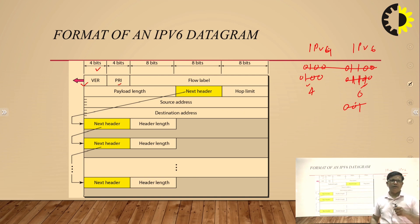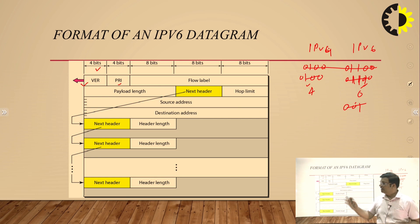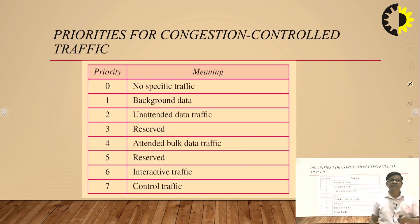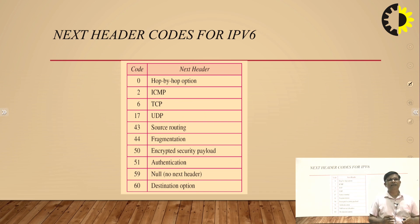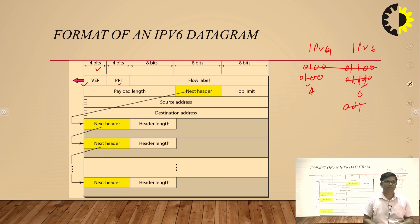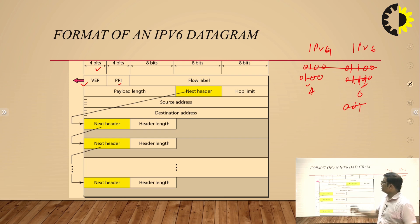The priority bit is related to IPv4 and is also treated as priority in IPv6. Priority means that this data is important and needs to be transmitted immediately when the packet is sent. This priority sets the priority of the packets. Then there is the flow label field, then the payload length field which indicates the size of the data, and then the next header field.